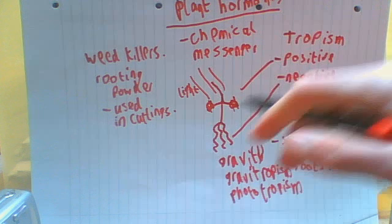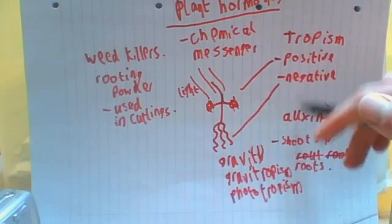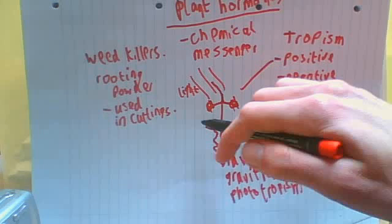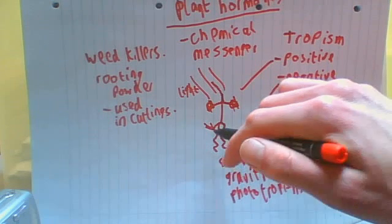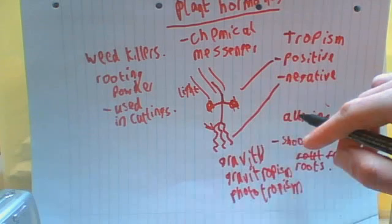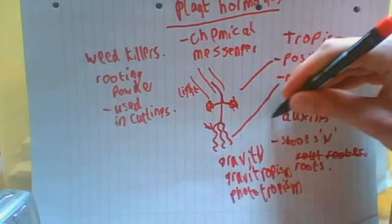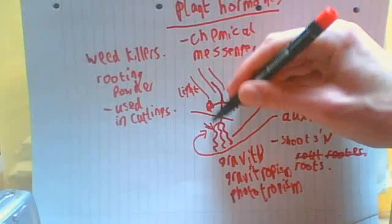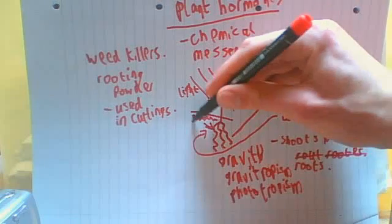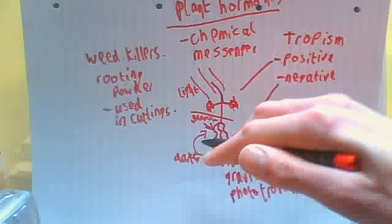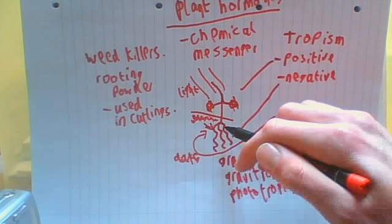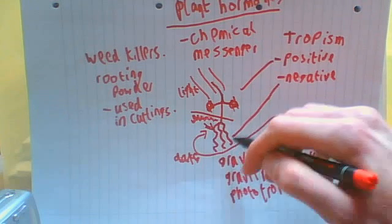The same goes for roots, but it's the complete opposite. Supposing there's a high concentration of auxin in the root on one side, the growth rate of that root will slow down because auxins are in high concentrations in the darker part. If one side is deeper and darker, it will grow slower than the other side. The root closer to the light will have a lower concentration of auxin, meaning it will grow faster.